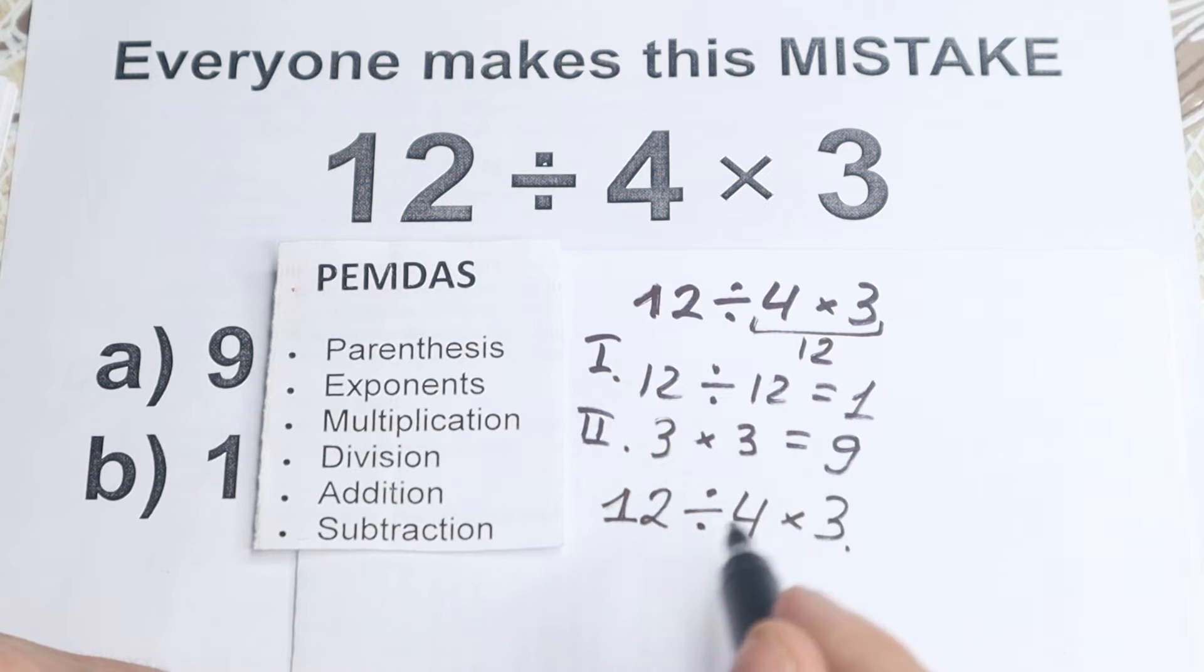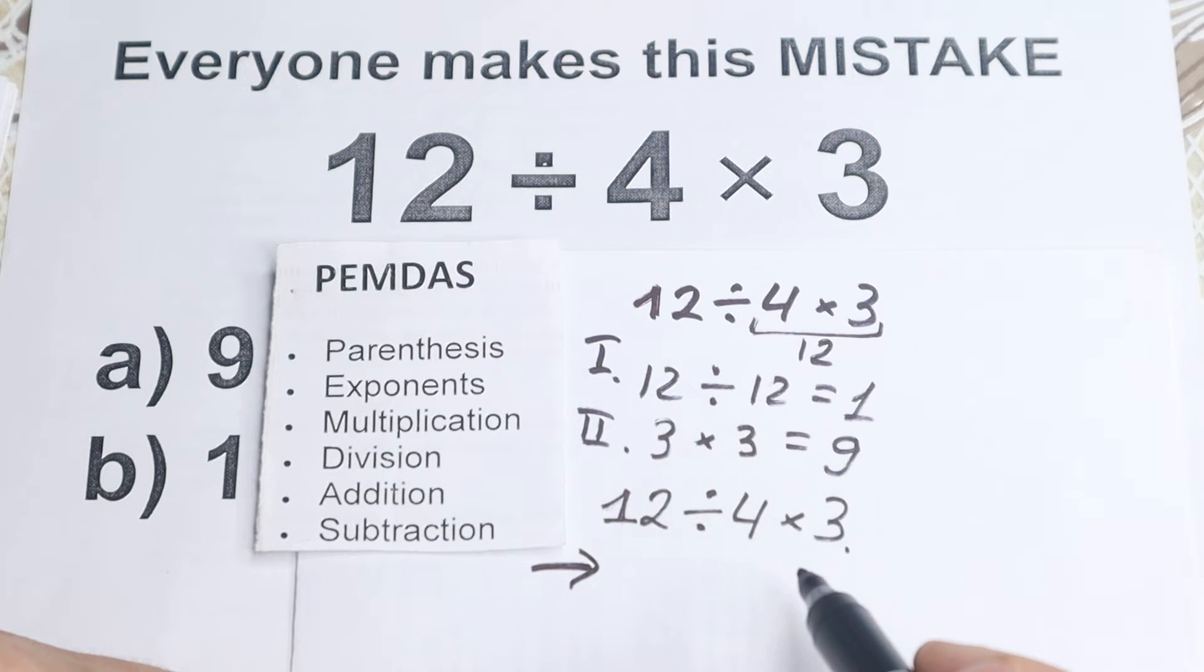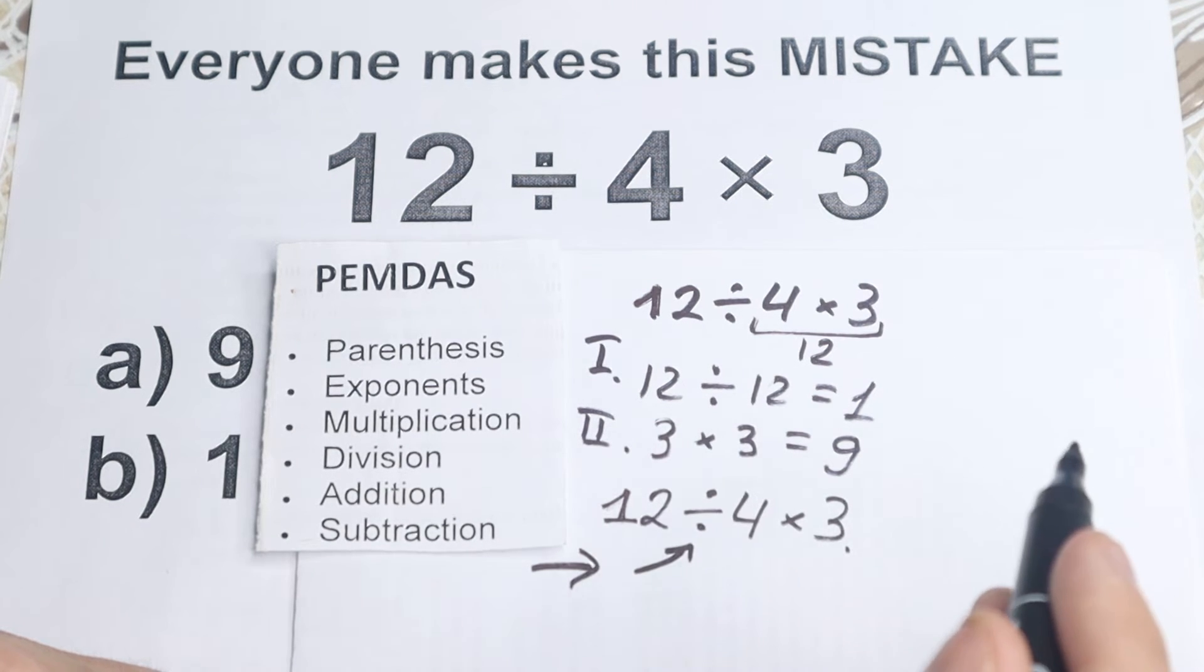But how can we start to solve it according to this group? We need to look, we need to scan what is the first sign from left to right, because it goes, it works from left to right, and we need to scan what is the first sign. The first sign from left to right is this division. So it doesn't matter, division, multiplication, multiplication, division, first sign is division, so let's divide it first.